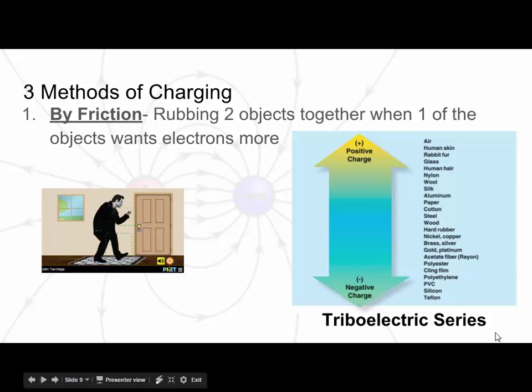We're going to talk about the three methods of charging an object. We've talked about charge, and charge is measured in Coulombs. To get charge to move to different objects, we have to have a conductor. The charge that is actually moving are the electrons, because they're farther away from the nucleus and more free to move around. So how do we actually get an object to be charged?